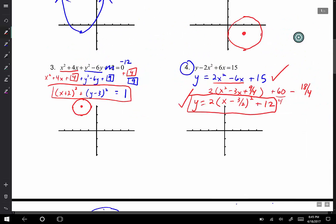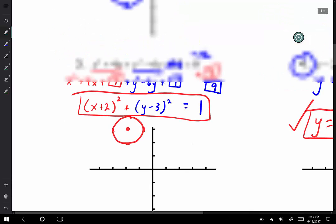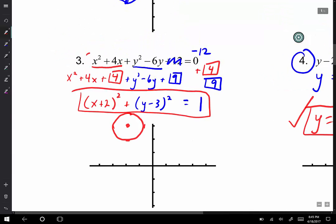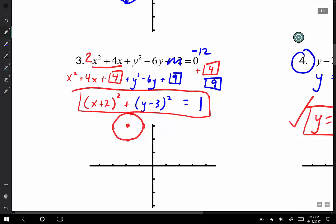Just remember with circles, if let's say there was a 2 here and a 2 here, we would have just divided everything by 2 right away. Because with circles you don't want a number there, you want it to just be x² and you want it to just be y². So make sure you do that with circles.